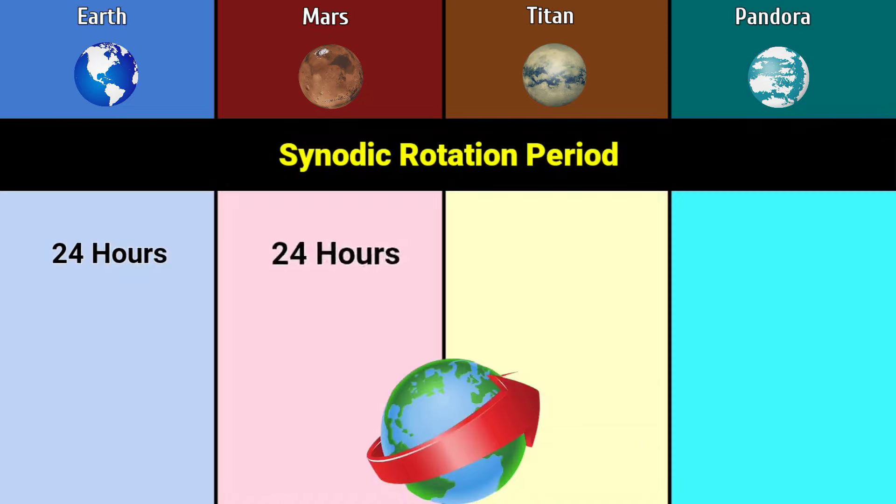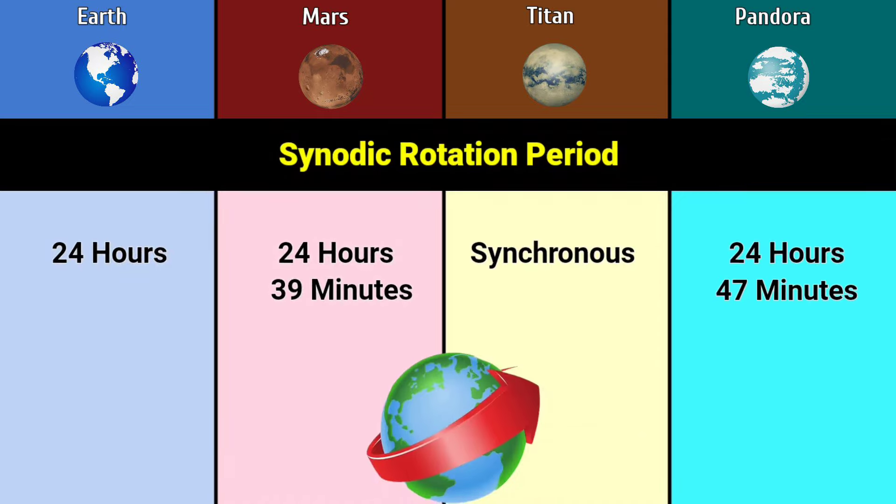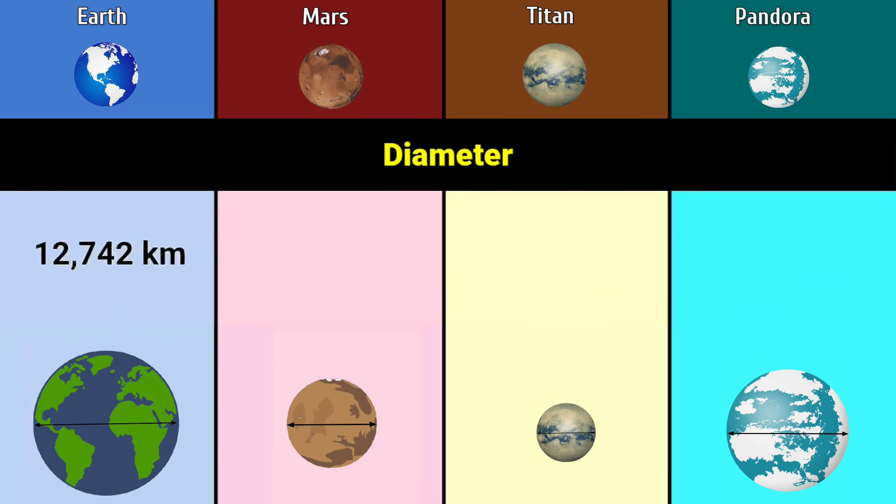Synodic rotation period: 24 hours, 24 hours and 39 minutes, synchronous rotation, 24 hours and 47 minutes. Diameter: 12,742 kilometers, 6,792 kilometers, 5,149.5 kilometers, 11,447 kilometers.